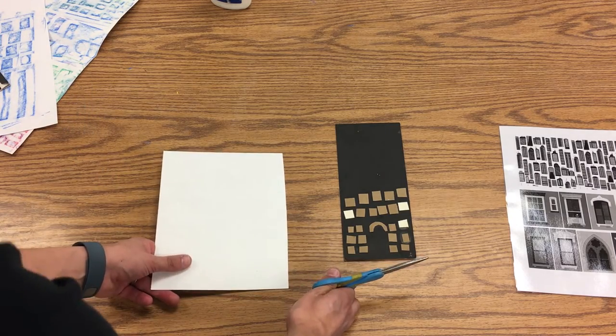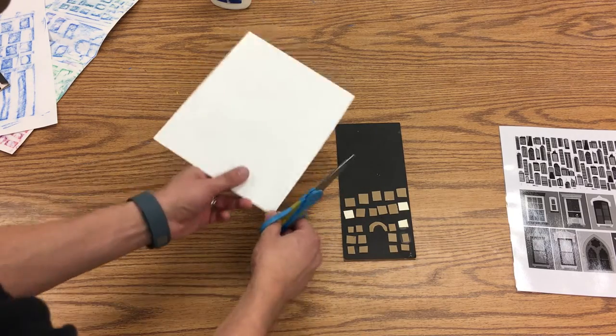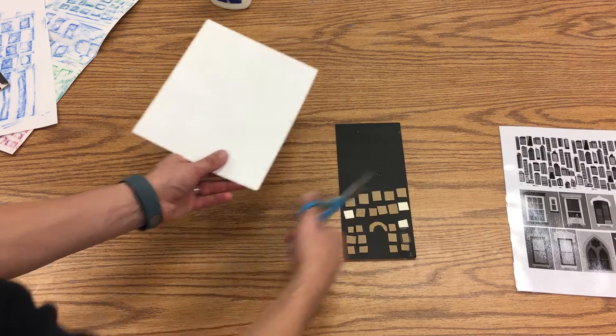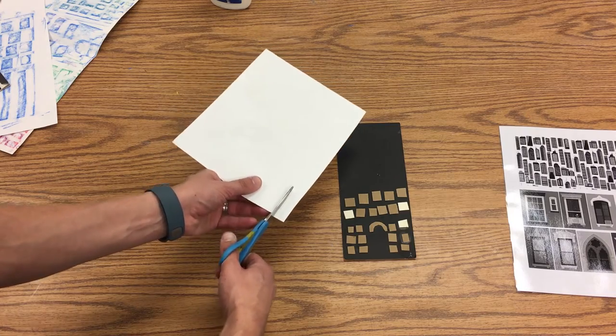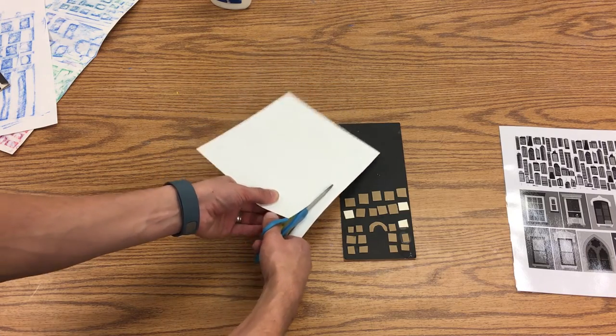So let's just go ahead and what I want to do is I just want to make a row of windows. So I'm going to cut a long strip like this.